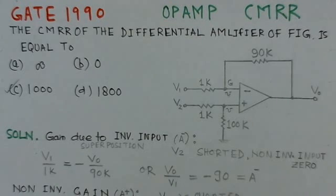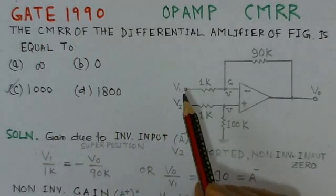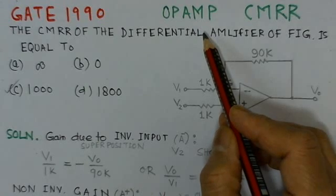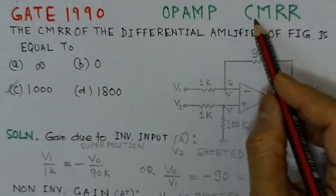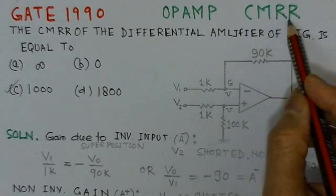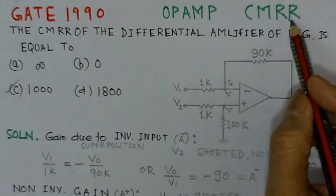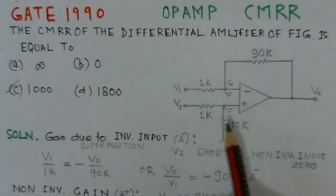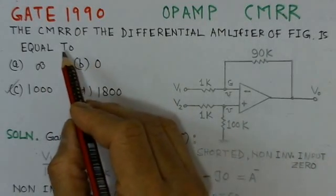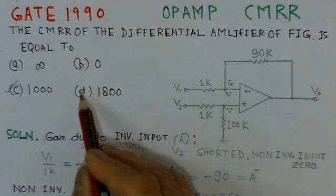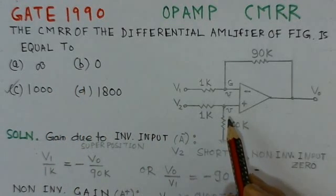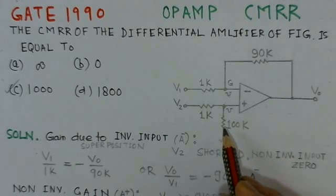The present problem considered here is from GATE 1990, and this problem is based on operational amplifier characteristics, especially the characteristics of common mode rejection ratio. We will first read out this problem and then see the solution. The CMRR of the differential amplifier shown in the figure is equal to — there are four options, and the circuit diagram given is for a differential amplifier.